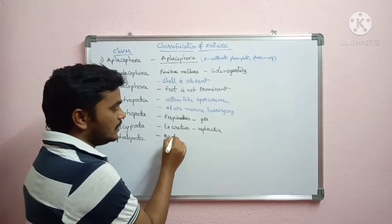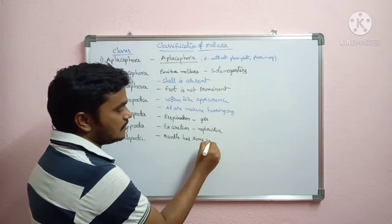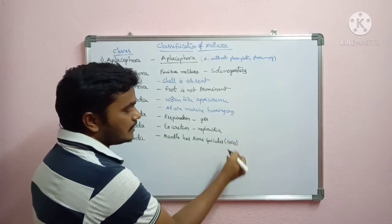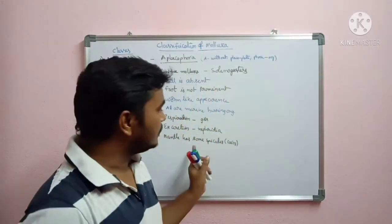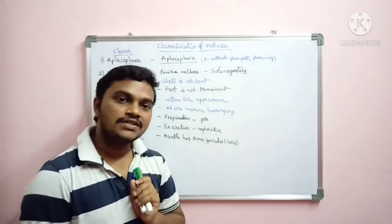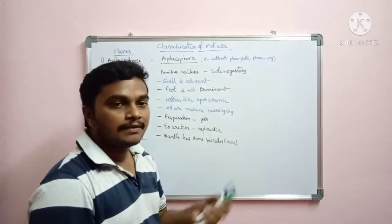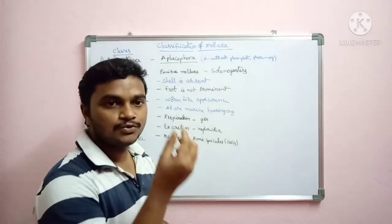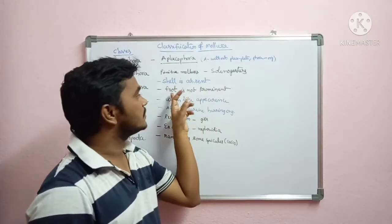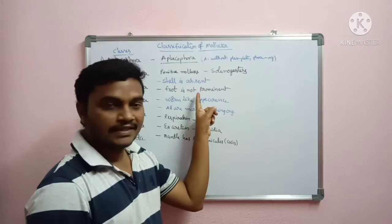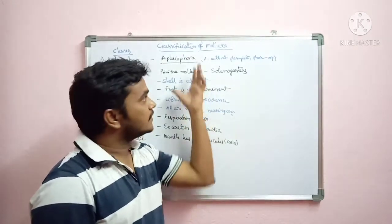The mantle, which is a layer, has some spicules made up of calcium carbonate. Calcium carbonate spicules are present on the mantle. The foot is either vestigial or rudimentary. These are the characteristic features of Aplacophora.